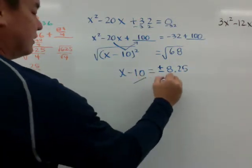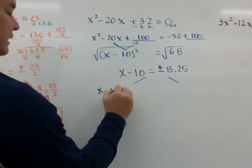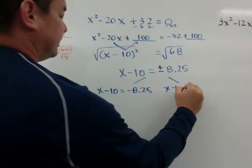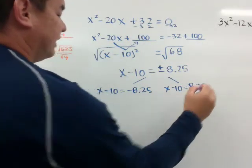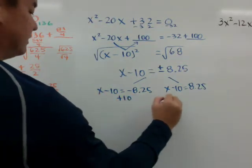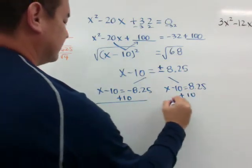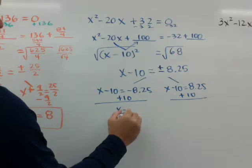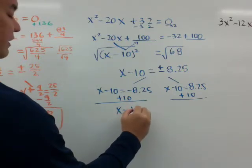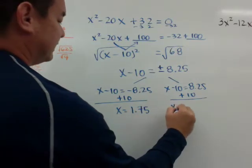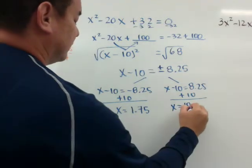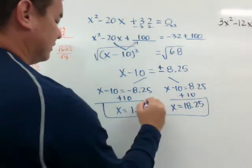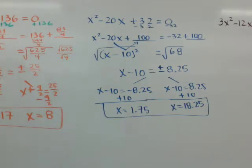Splitting: x minus 10 equals negative 8.25, and x minus 10 equals positive 8.25. Adding 10 to both sides: x equals 1.75, and x equals 18.25. That's how you get your two answers.